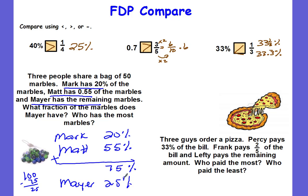Mark plus Matt plus Mayor have to add up to 100 percent, which they do. Now that I know Mayor has 25 percent, I can easily convert that to a fraction. You could do 25 over 100 and simplify it, but this is one you should know: 25 percent is 25 cents, which is one quarter out of four.